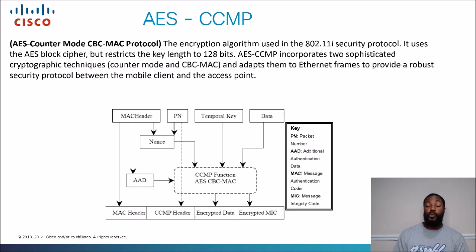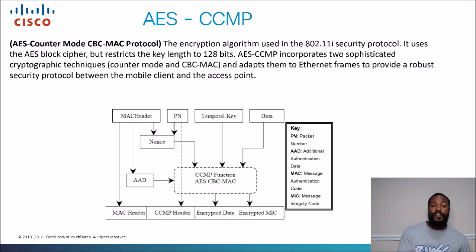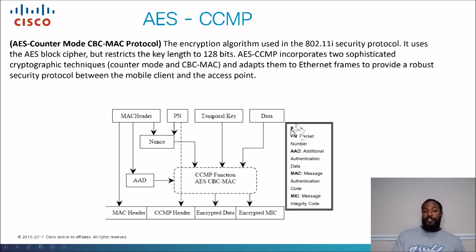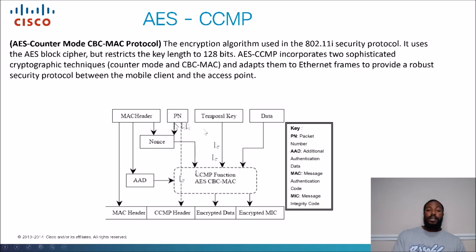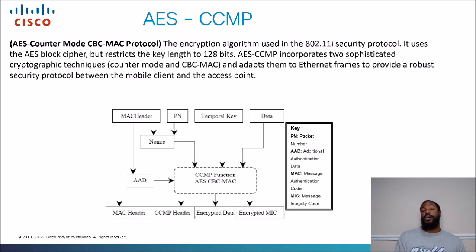Remember, the encryption happens between the client and the access point. This is a breakdown of the header being encrypted using AES, including the different parts of the CCMP function: packet number, MAC (message authentication code), and MIC (message integrity code). You don't really need to know too much about the algorithms for the CCNA exam — just know that there are two types of AES algorithms: AES CCMP and AES GCMP.